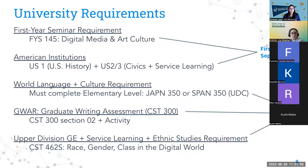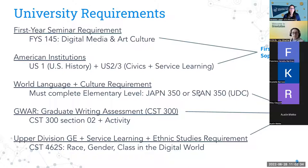For the world language and culture requirement, everyone must complete one level of a world language course to graduate from CSUMB. If you have AP credit or a college-level course in a language, that satisfies this requirement. If you haven't completed it, we'll plan Japanese 350 or Spanish 350 into your learning plan — these are very culture-based with no prerequisite other than being a junior or senior.